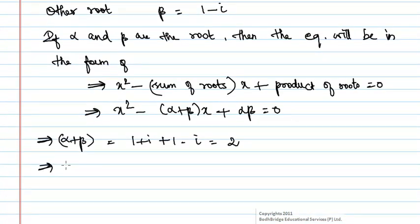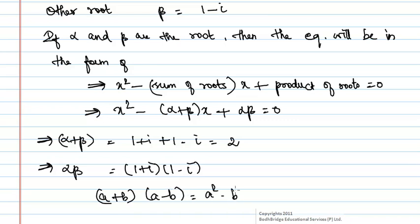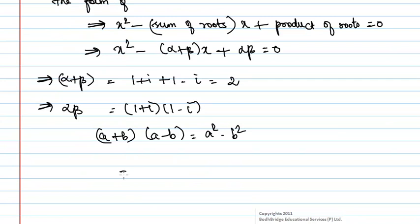Let us find αβ, which is equal to (1+i)(1-i). We know that (a+b)(a-b) = a²-b². Using this formula, we get αβ = 1² - i².